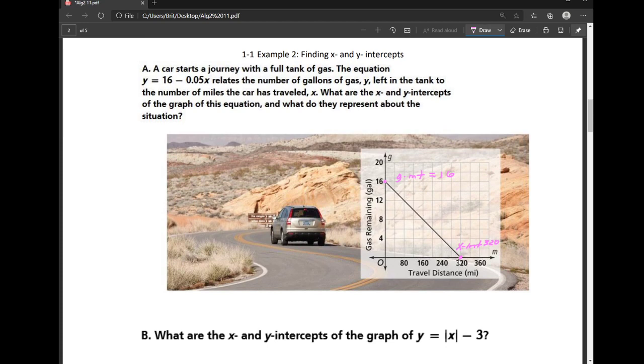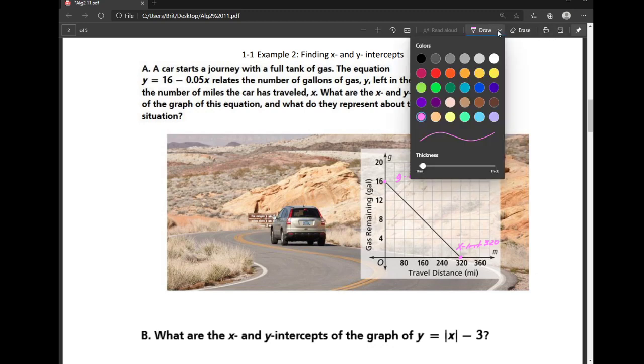But that can be kind of hairy. Like I said, that could be 319, and it's just so hard to see. So when your scale is exceptionally large, like you see here, we want to develop other ways to identify our intercepts.